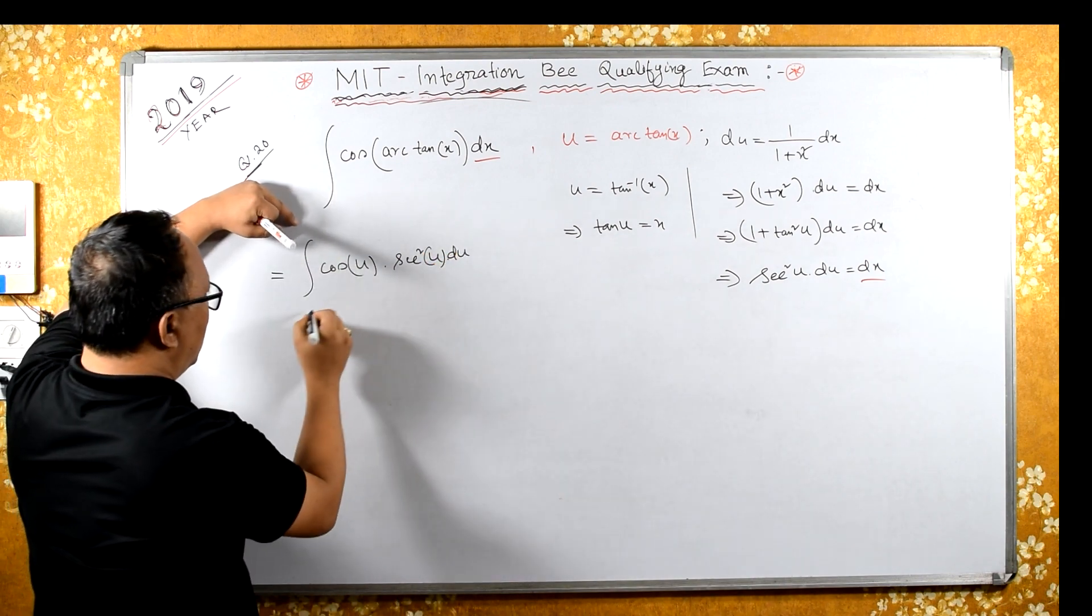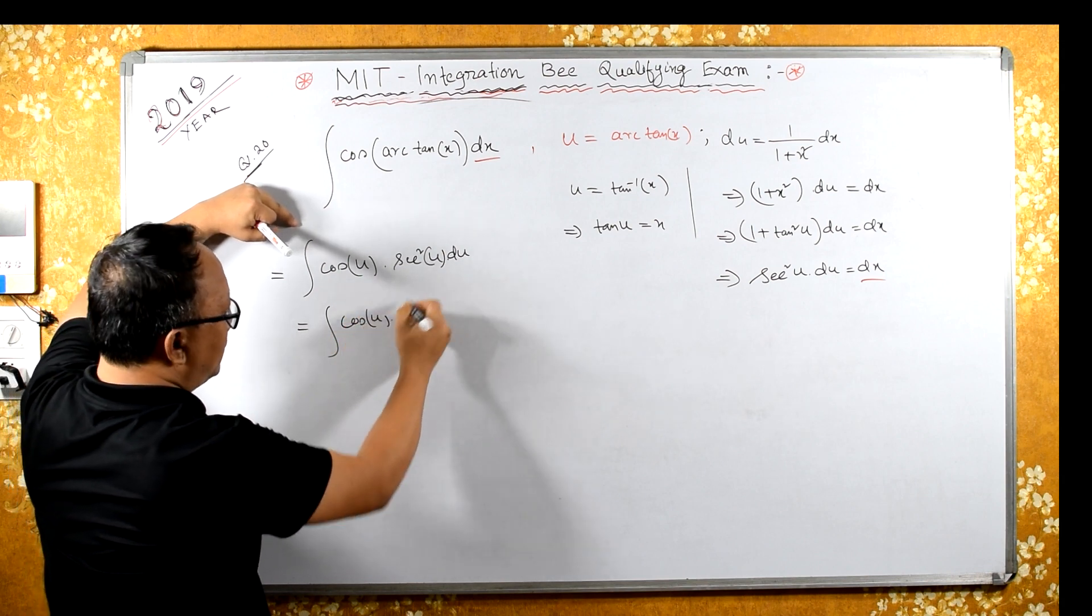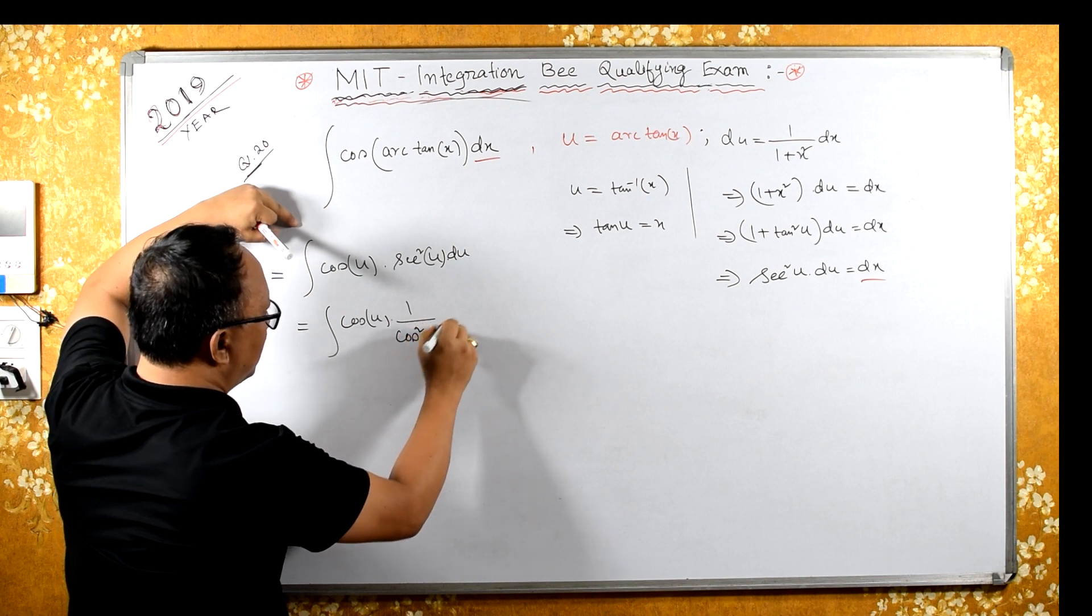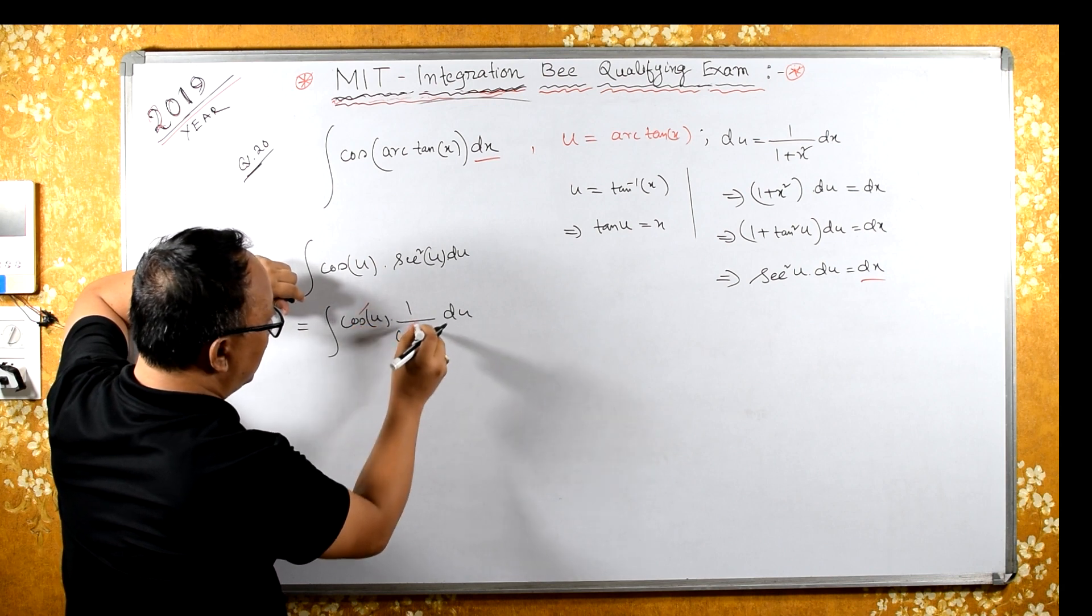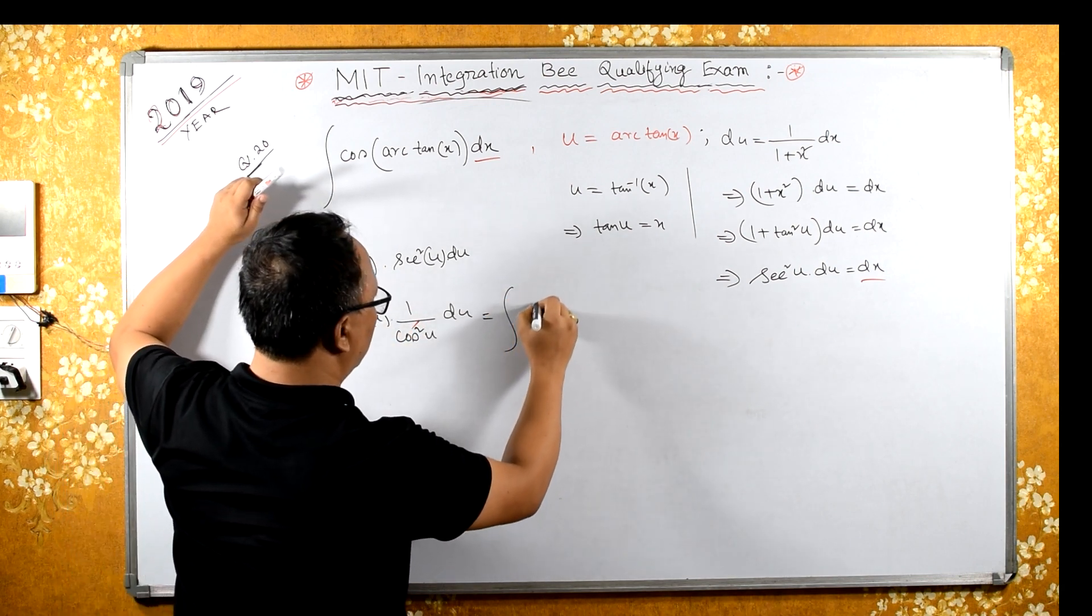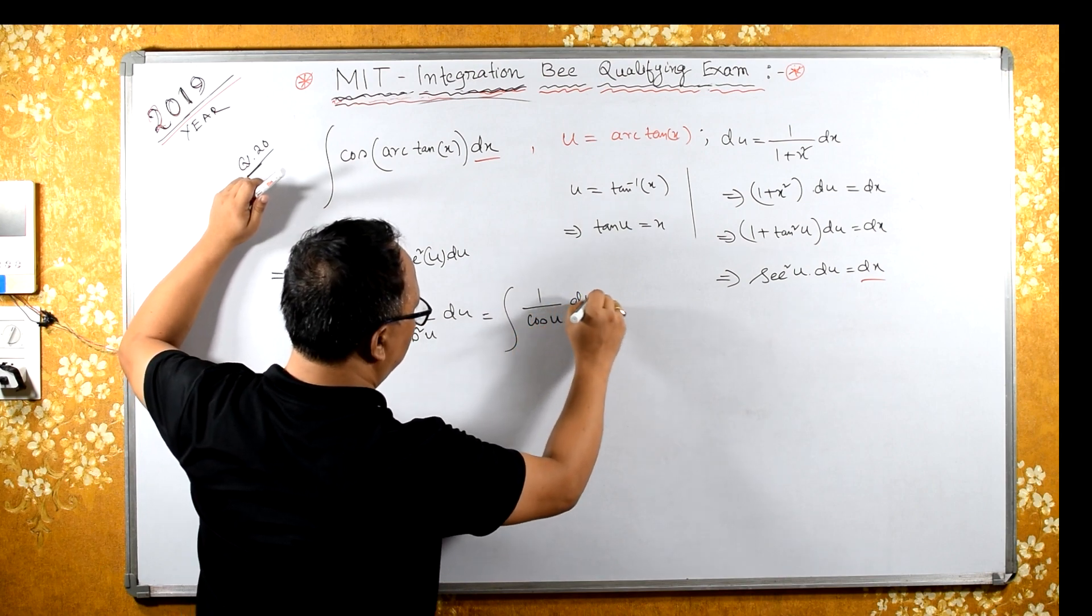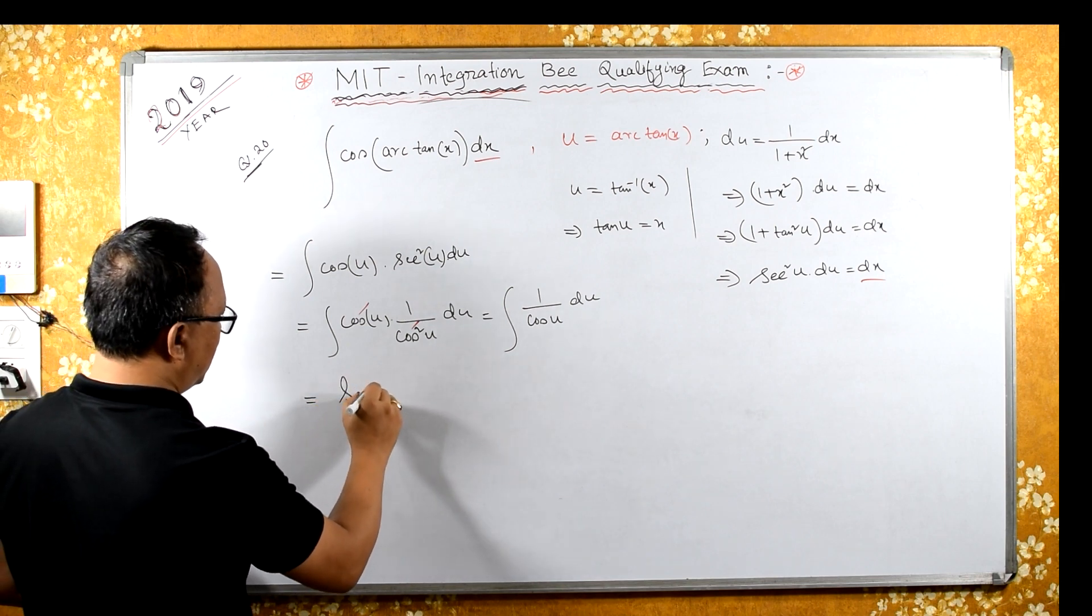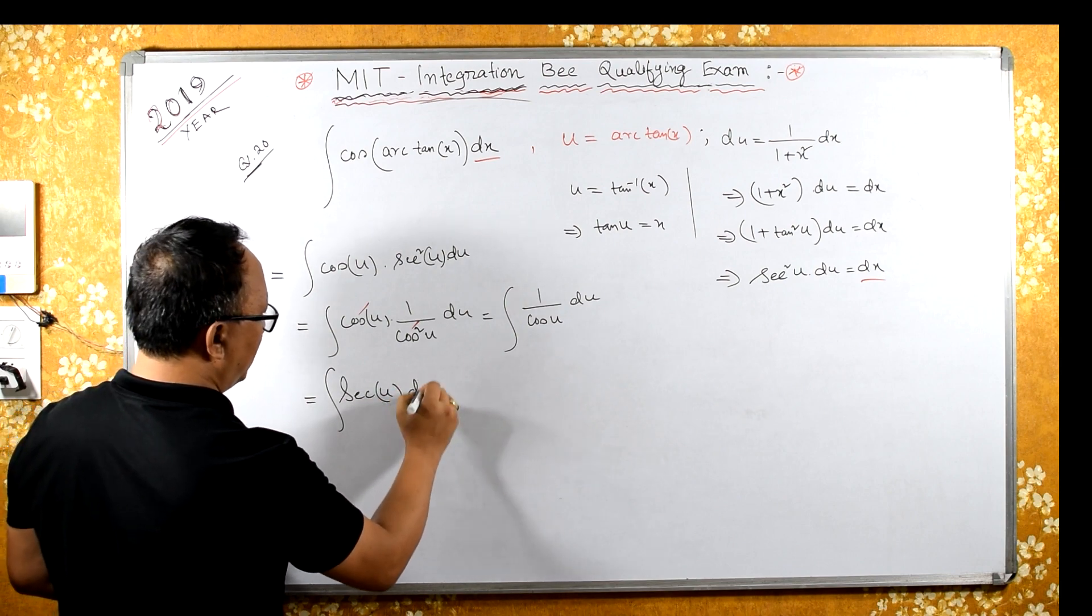Now this is same as integral of cos u times sec squared u du. Here one cos and one cos will get cancelled, so we have integral 1 over cos u du. 1 over cos is sec, so we have integral sec u du.